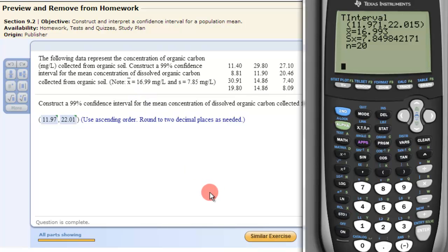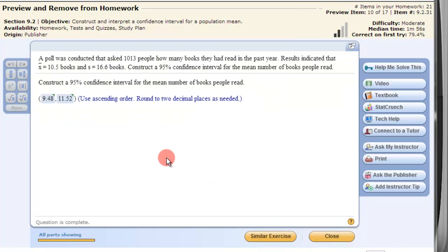Let's look at another problem where they just give us the standard deviation and mean and see how we do it differently. So in this example, polls conducted of 1013 people. The results indicated that the mean was 10.5 books and the standard deviation was 16.6 books. Construct a 95% confidence interval for the mean number of books people read.